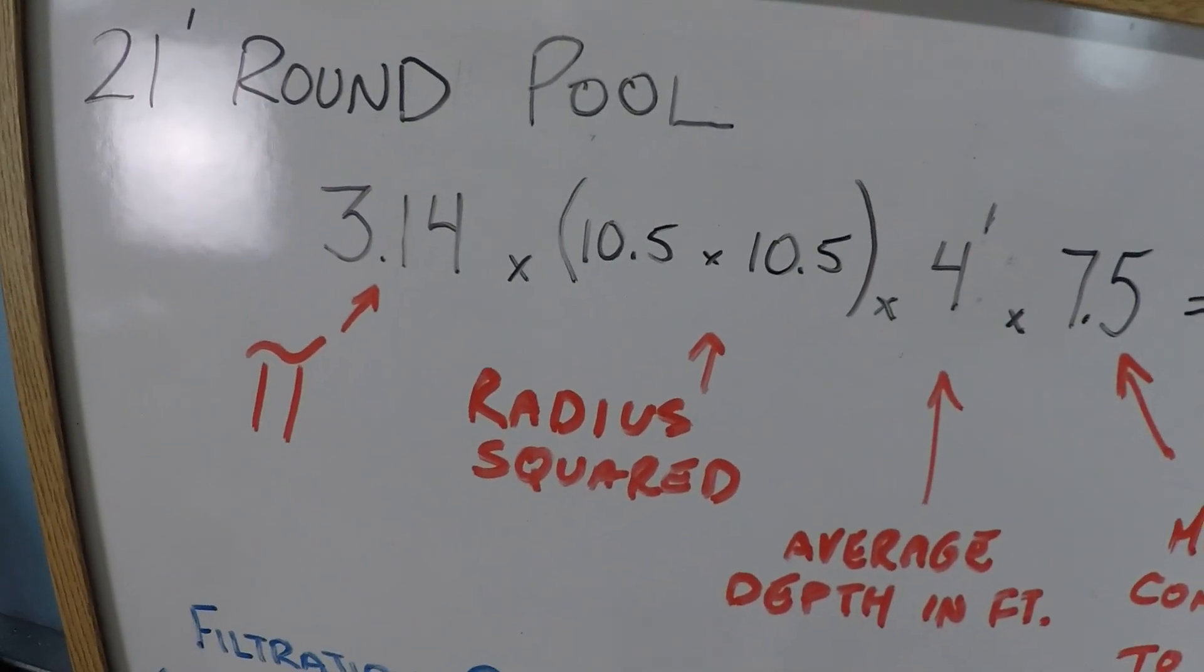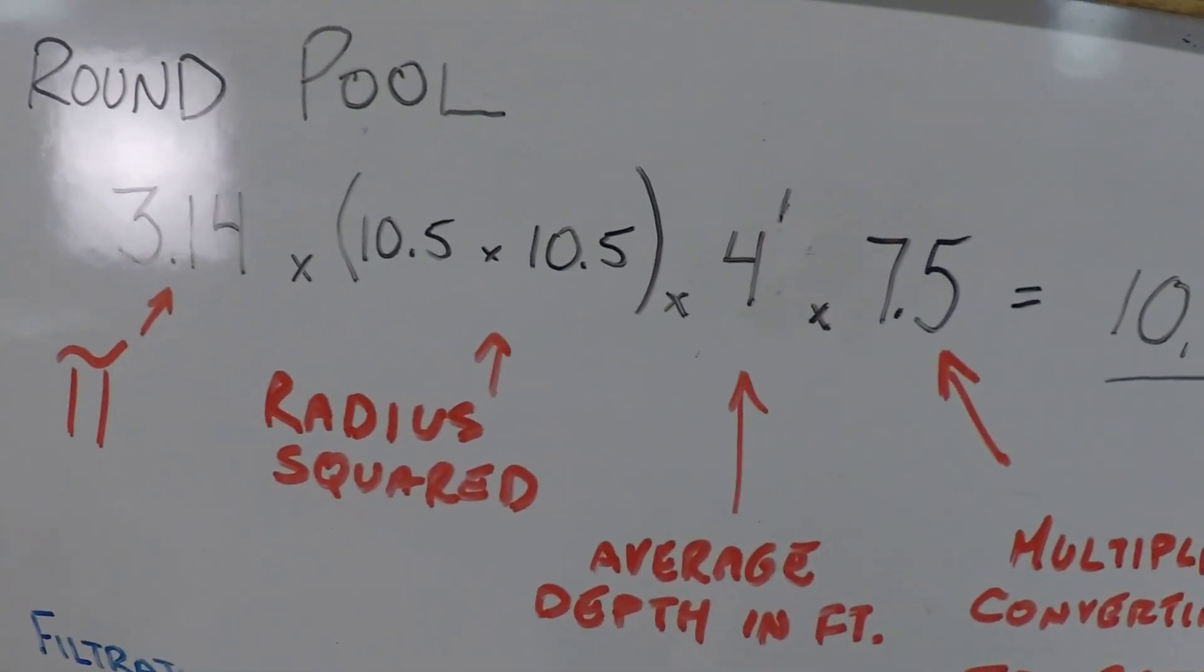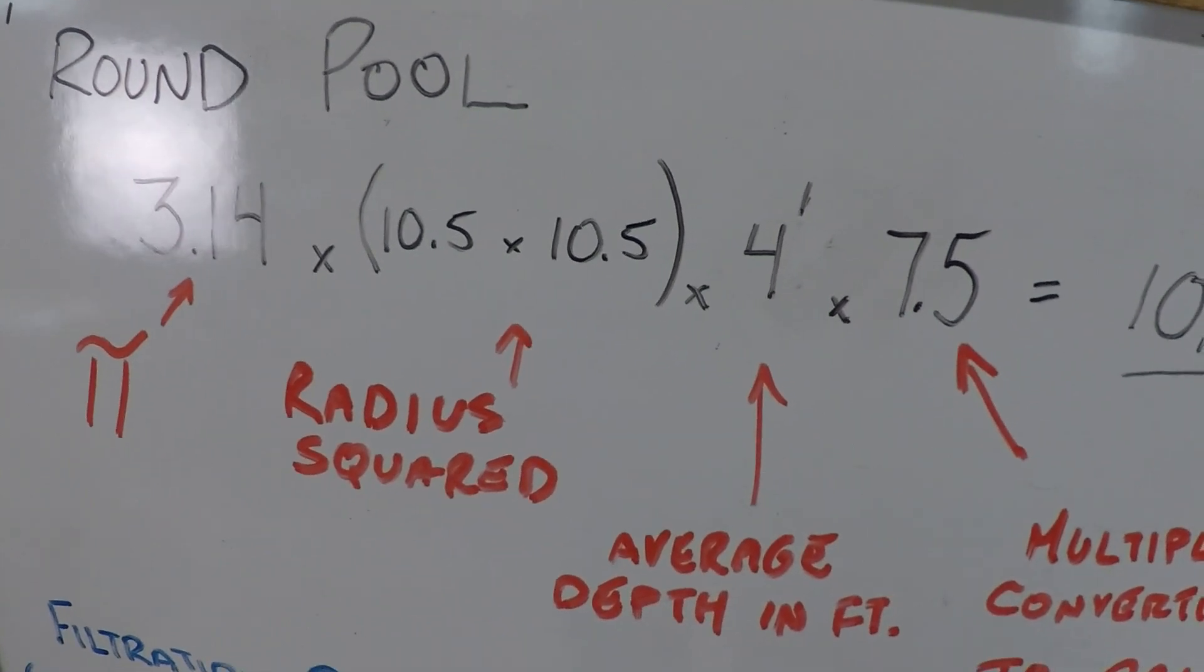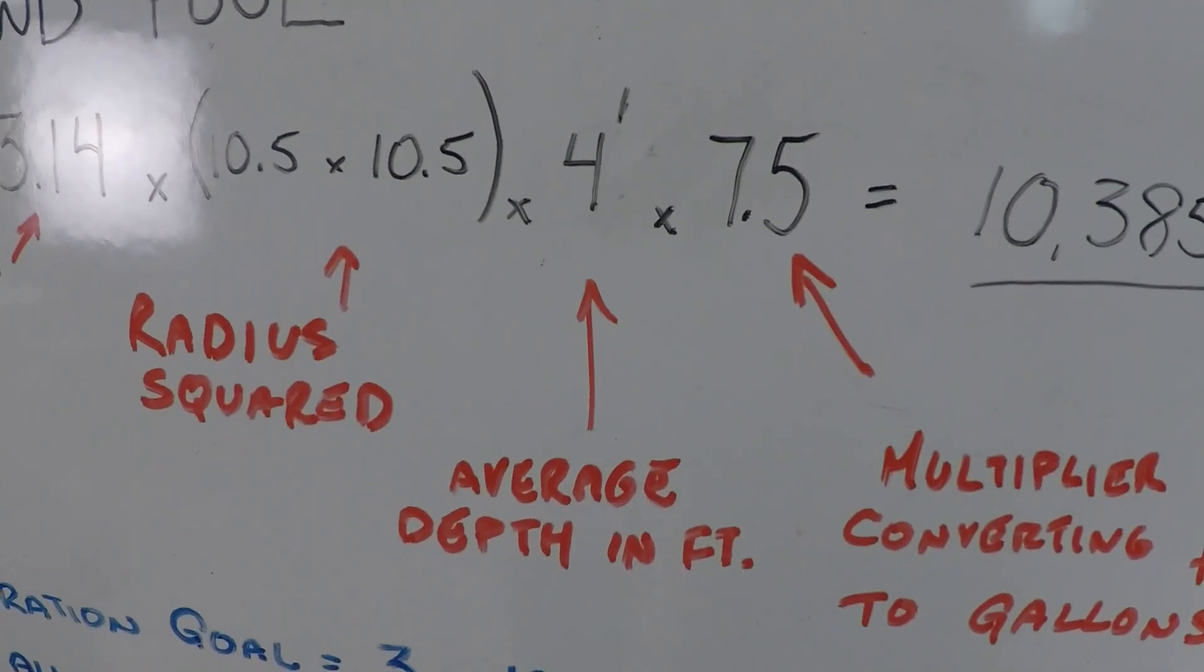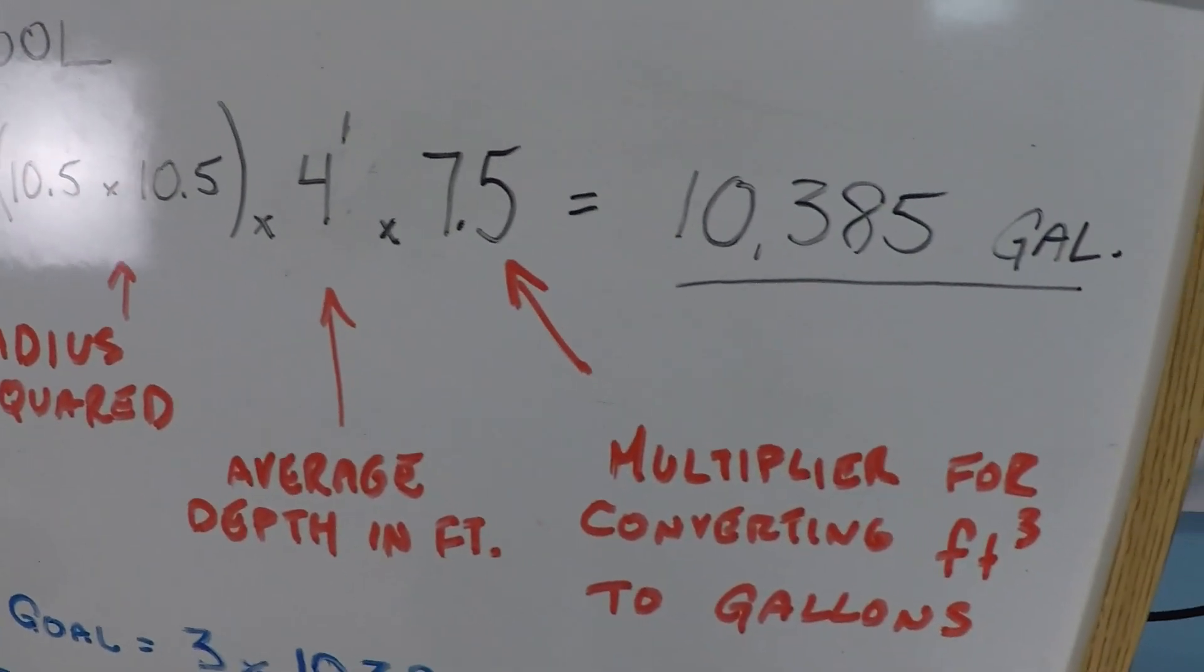To break that down, that's 3.14 times the radius squared, so 10.5 times itself, times 4 foot as the average depth, times 7.5.